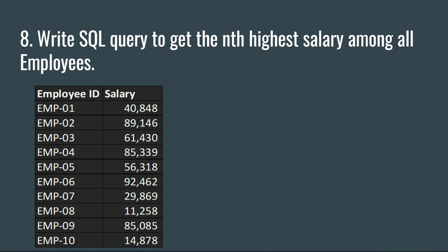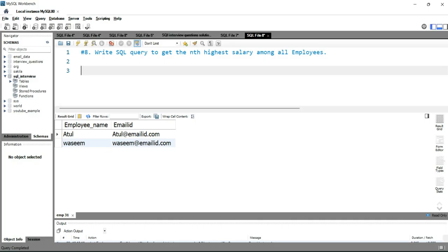Within this video we are going to discuss two different approaches to get the same output. The first approach will use the ROW_NUMBER function, and the second approach is the correlated nested query. Let's go to our SQL workbench and try to find out all the details from this table on which we are going to write the query.